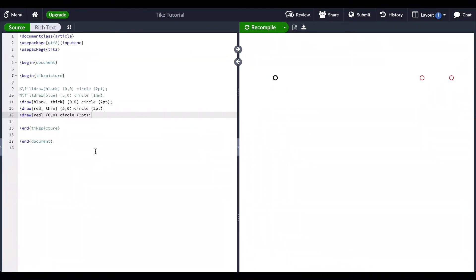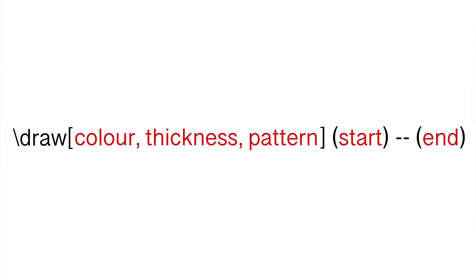Now let's move on to drawing lines in TikZ. The syntax is very similar to that of a point. We use the draw command, specify any additional characteristics like color, thickness, and pattern. Then you give the starting point of the line, add two dashes, and give the end point. The two dashes tell TikZ you're drawing a line, and the line will be drawn between the two given points.